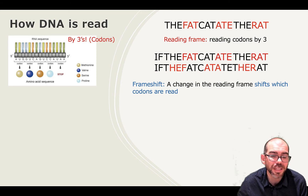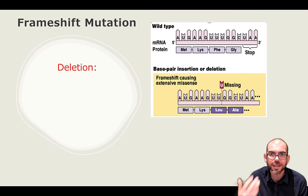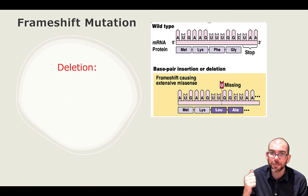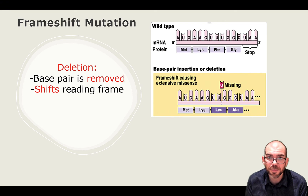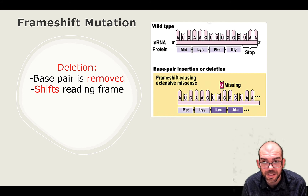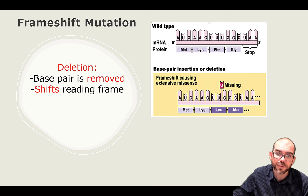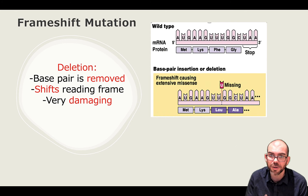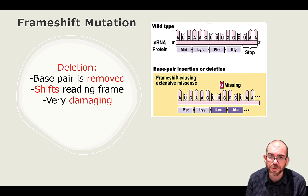One example of a frameshift is a deletion — when one base pair is removed, that's going to shift our reading frame. With the wild type we had AUG, AAG, UUU, but now with a deletion we might have AUG, AAG, UUG. For all of the amino acids following that deletion, we've shifted the reading frame and will have a completely different sequence of amino acids. This is tremendously devastating for protein production because it changes the sequence of all amino acids after it occurs.